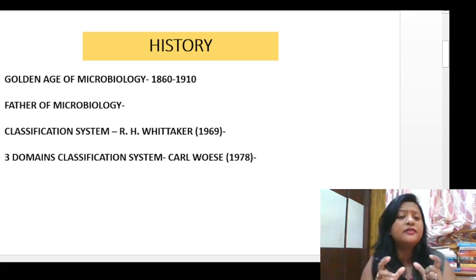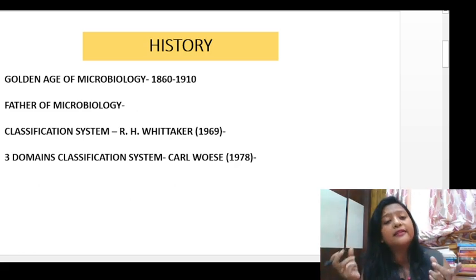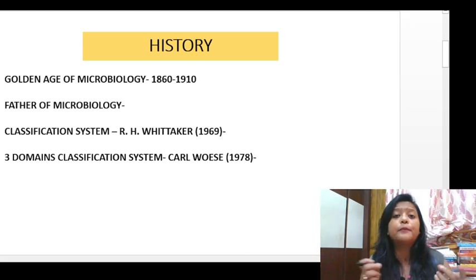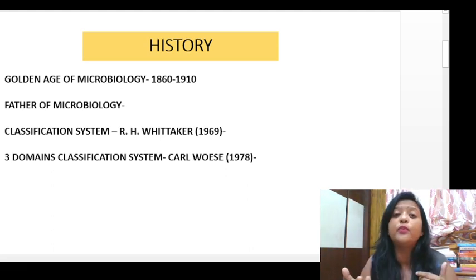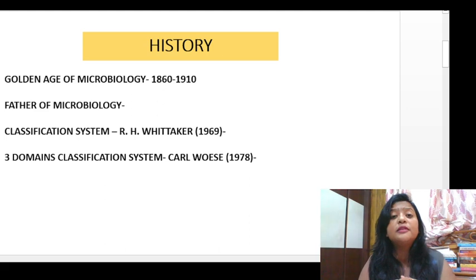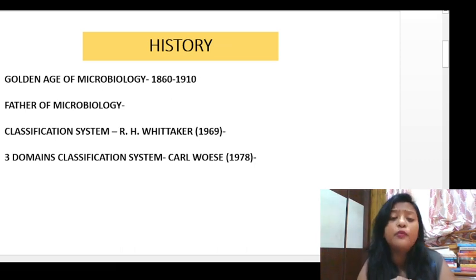Basically, I am going to tell you about bacteria. Microorganisms — 'micro' means very small. These are organisms that we can't see directly with the eyes. Some organisms you can see, like yeast, but microorganisms need a microscope to be seen. Microorganisms are very small and tiny organisms, present all around us in our environment. Microorganisms can be beneficial and harmful.